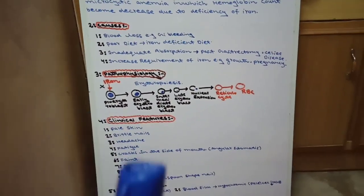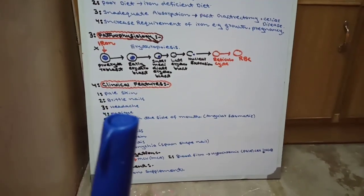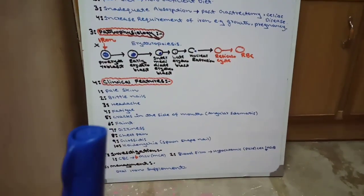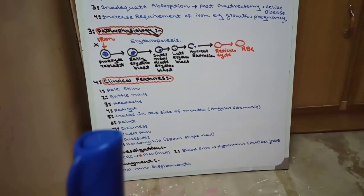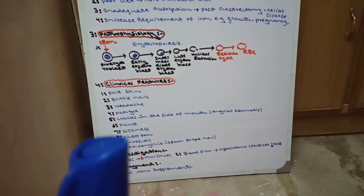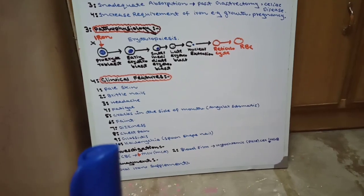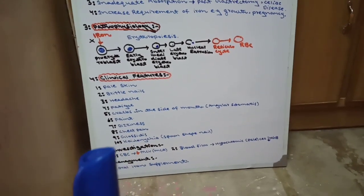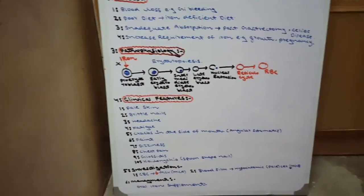There are ten clinical features of iron deficiency anemia: number one, pale skin; number two, brittle nails; number three, headache; number four, fatigue; number five, crack in the side of the mouth called angular stomatitis; number six, faint or syncope — temporary loss of consciousness; number seven, dizziness; number eight, chest pain; number nine, glossitis — inflammation of the tongue; and number ten, koilonychia — spoon-shaped nails.